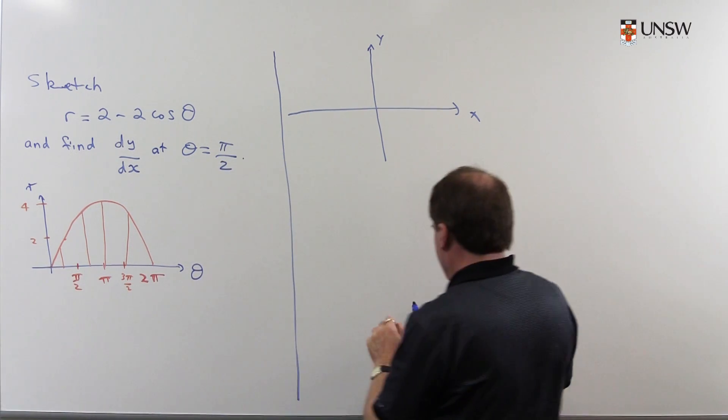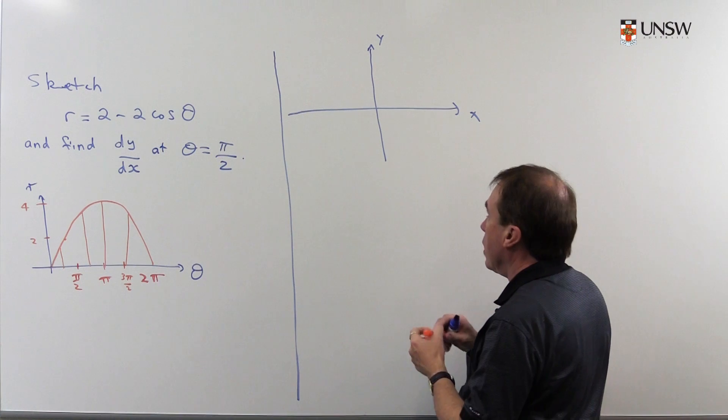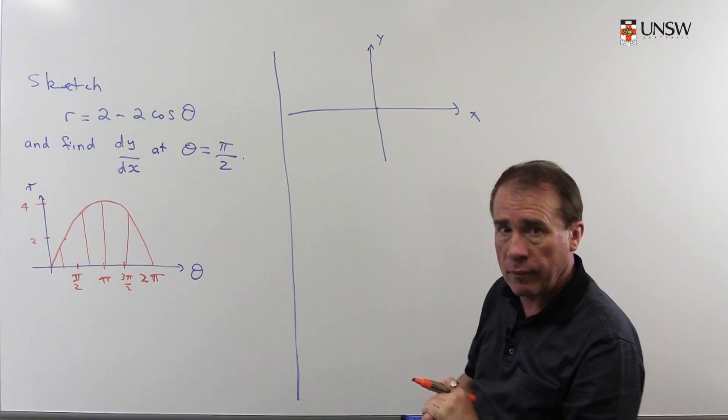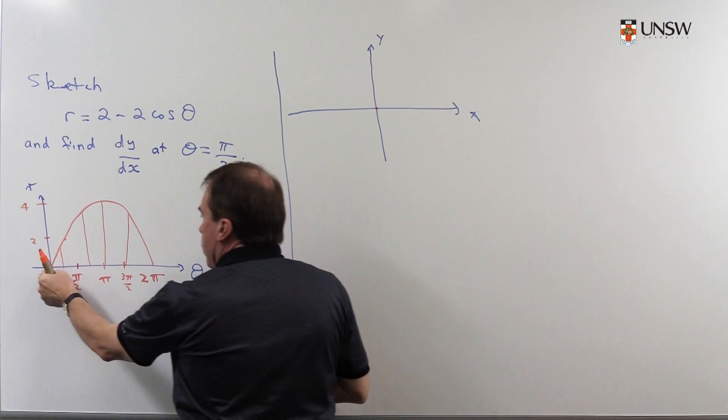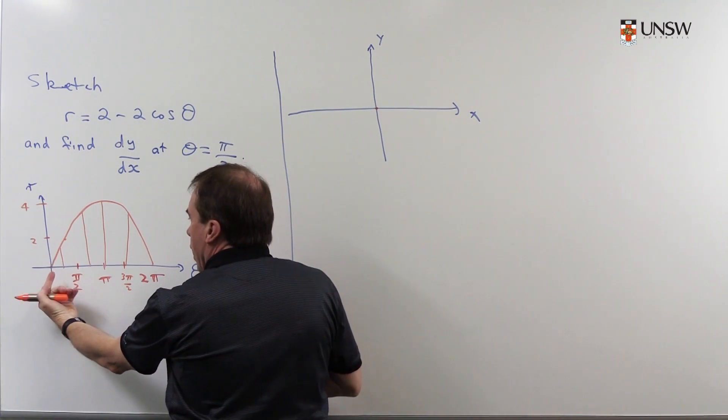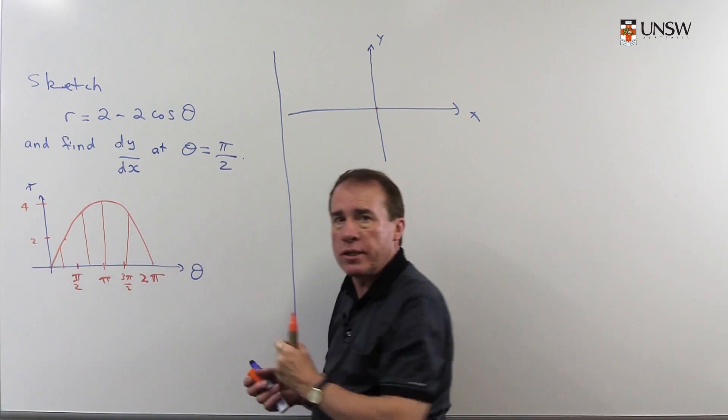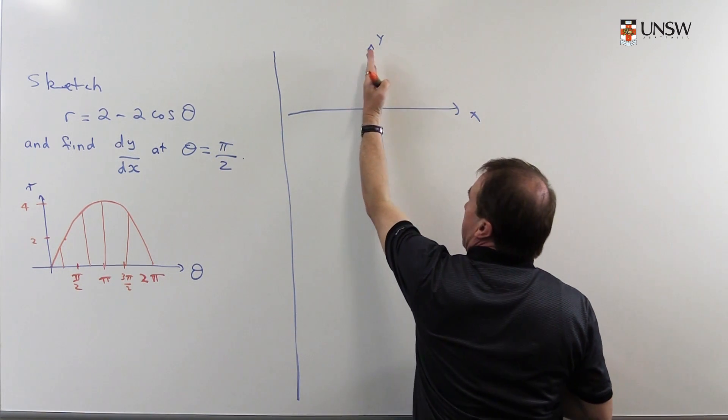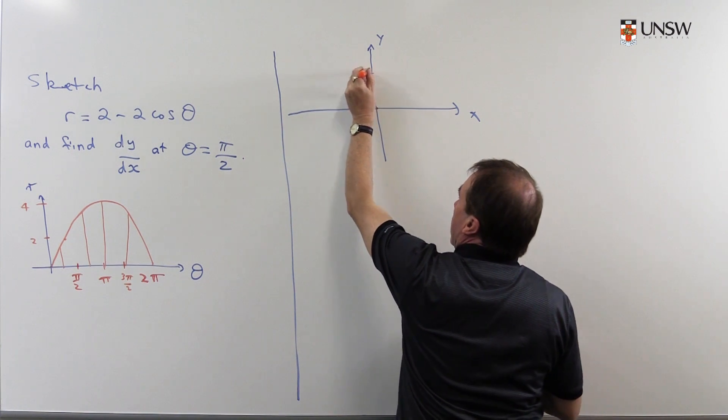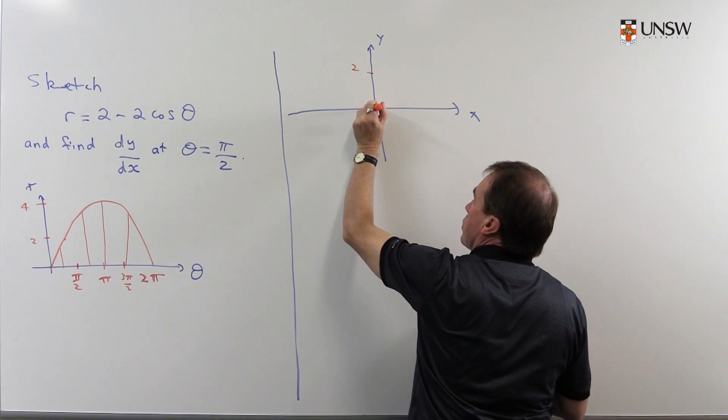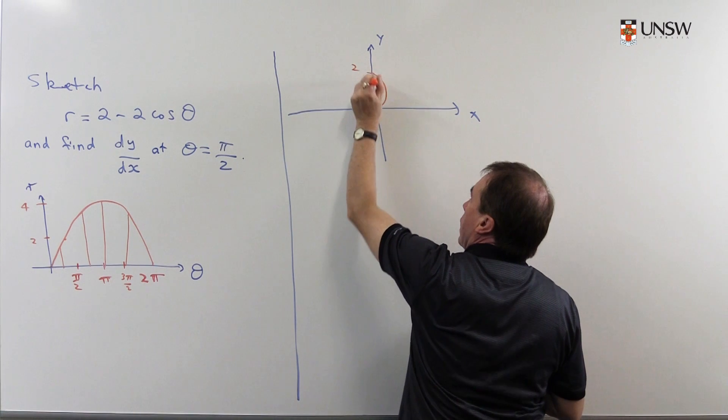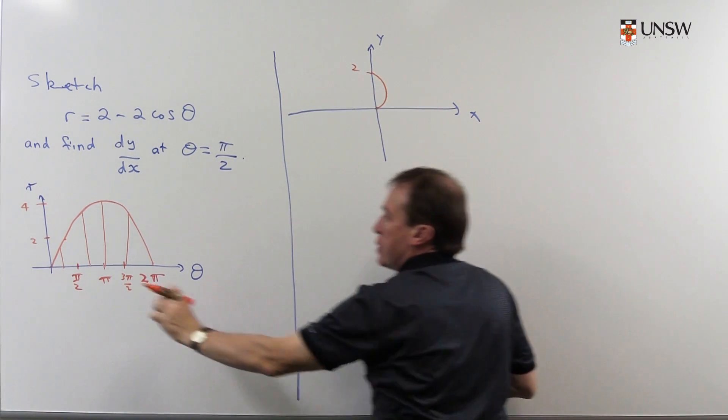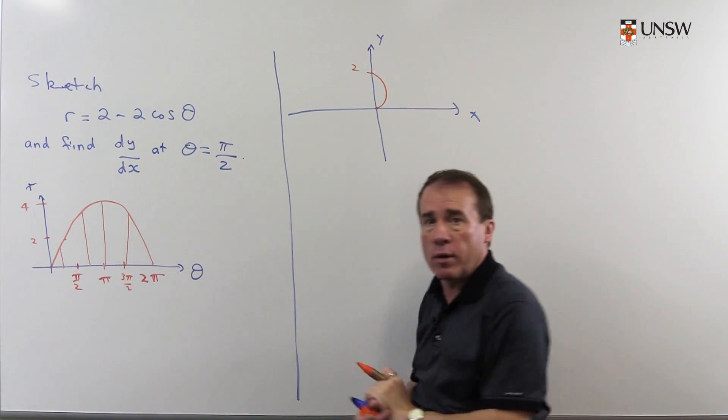So when θ is 0, I'm at r = 0, so the curve starts at the origin there. As I move towards π/2, then the r values are going from 0 out to 2. As I rotate around, the r values are going out to a distance of 2, and I imagine these little radii correspond to the heights as I move around.